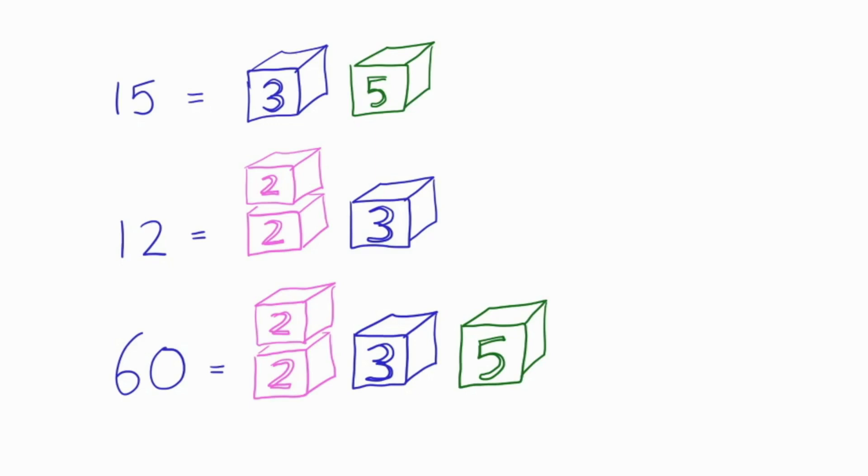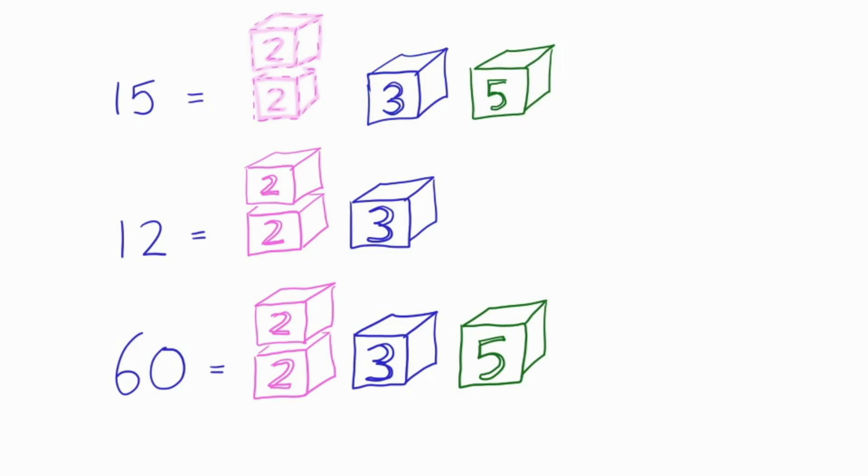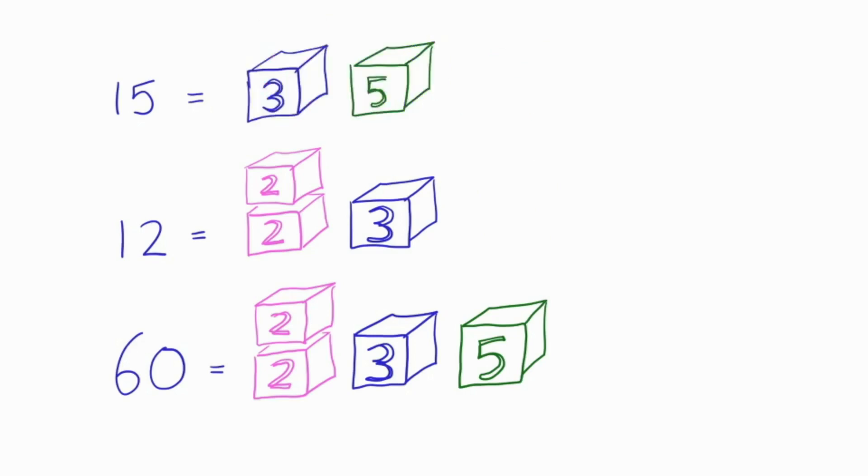If you can build b by adding blocks to the castle you've already got from a, and without having to take anything away. So, with the blocks we have on the screen, you can see that 12 divides 60 because we have to add one single green block to make the 12 castle turn into the 60 castle. You can also see that 15 divides 60. We just have to add two pink blocks. But 12 doesn't divide 15 because 12 has too many pink blocks. You'd have to take them away to build the 15 castle.